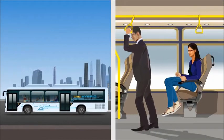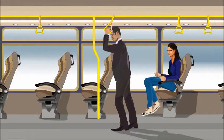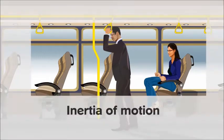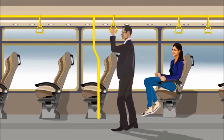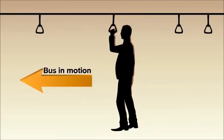With the application of sharp brakes, the bus stops all of a sudden and the passengers tend to fall forward. This is due to inertia of motion experienced by the upper part of the body. When the bus is moving, the whole body of the passenger is in a state of motion.